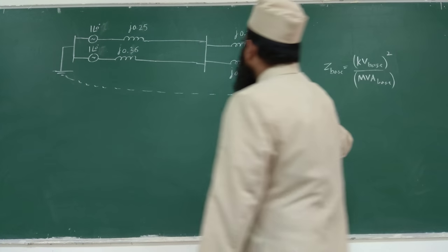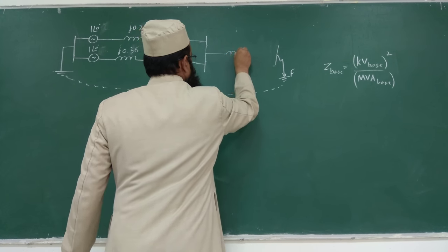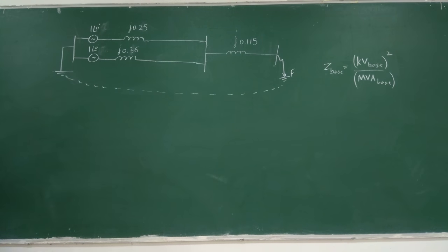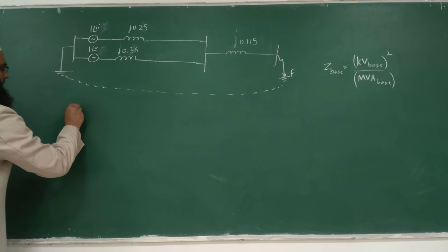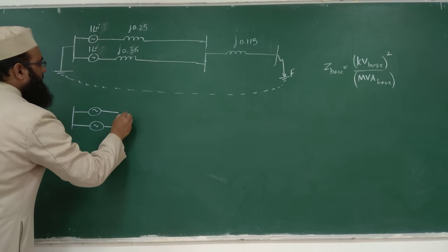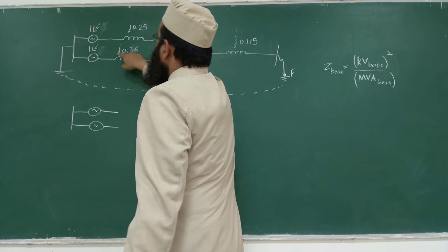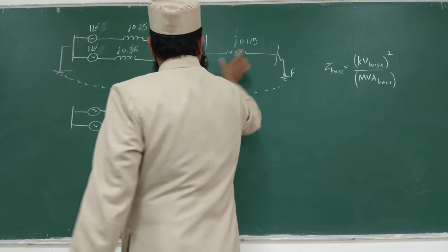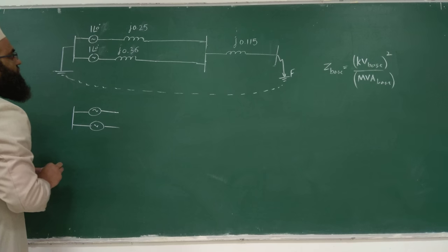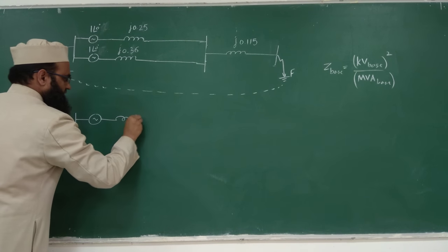The circuit further simplifies: we now have two parallel branches — one with j0.25 and one with j0.36 — both connected to the fault point F. The equivalent reactance X_eq = (j0.25 × j0.36) / (j0.25 + j0.36). Both generators have 1 per unit EMF, so they can be replaced by a single equivalent source.